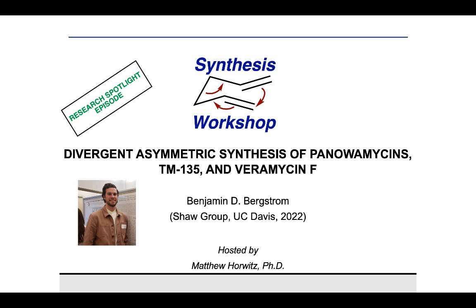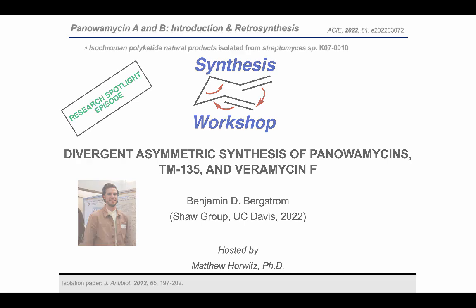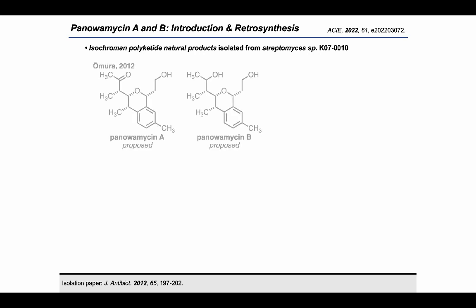Hi everyone. Thank you, Matthew, for that introduction, and thank you for inviting me to share my work on the divergent asymmetric synthesis of panolamycin A and B, TM-135, and varamycin F. Panolamycin A and B are a novel group of isochroman-based polyketide natural products first reported in 2012 by Omura and coworkers.